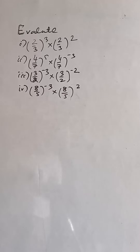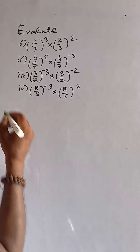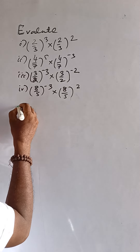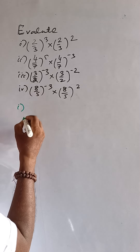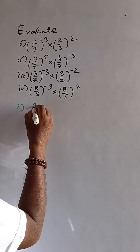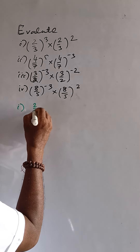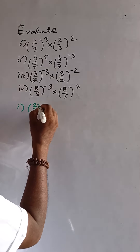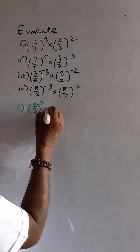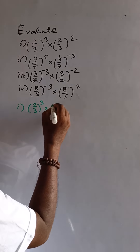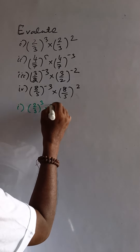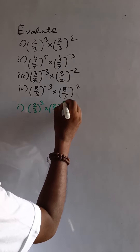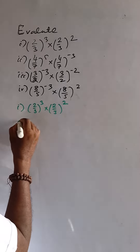Evaluate the following parts of the question of exponent. First part is 2 by 3 to the power 3 into 2 by 3 to the power 2.